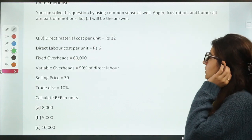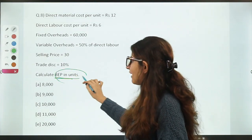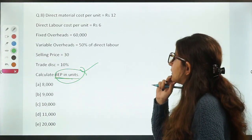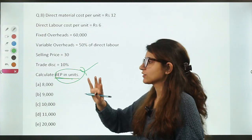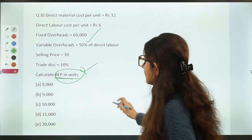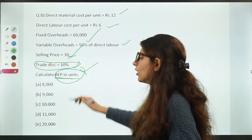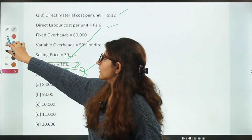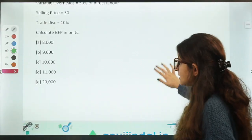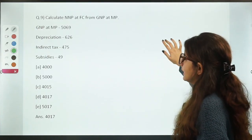The next question: direct material cost per unit is given, and you have to calculate BEP (breakeven point) in units. A very easy Commerce and Accountancy / costing question. The formula is fixed overheads divided by contribution per unit. The information given is the fixed overhead amount. Contribution per unit is calculated as selling price minus variable cost. Trade discount is also subtracted. The answer comes easily. Out of eight questions so far, three to four are numerical questions — the weightage of numerical questions in Phase 2 is very high.